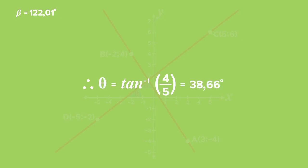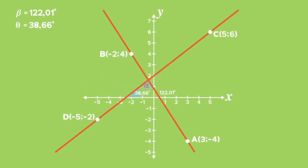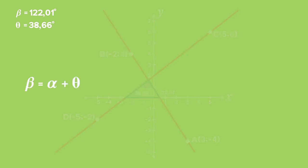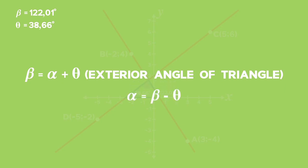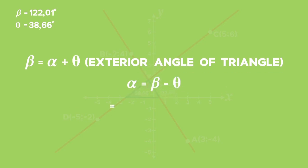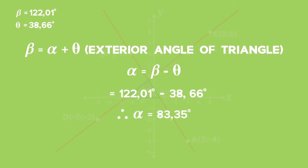Using your calculator, type in second function, tan, 4 over 5, and press equals. You get theta equals 38.66 degrees. From the diagram, you can see that beta is the exterior angle of the triangle that contains alpha and theta. Therefore, beta equals alpha plus theta, because the exterior angle of a triangle equals the sum of the two opposite interior angles. So alpha equals beta minus theta, which gives alpha equals 122.01 minus 38.66 degrees, equalling 83.35 degrees.